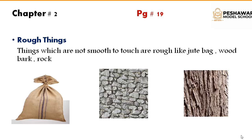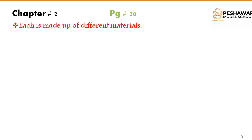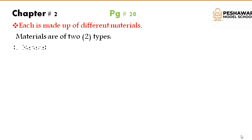So all these things are made up of different materials. Materials are of two types: number one is natural — natural means from nature — and number two is artificial, or man-made.